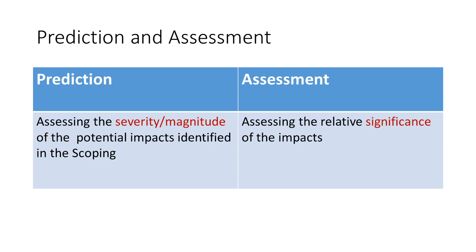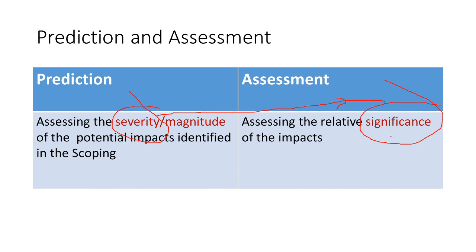What is prediction? Prediction is the part of the assessment stage of EIA. It involves assessing the severity of the impact — how severe is the damage a particular impact is going to cause. For example, water pollution identified in a tannery project. Once you know the severity, you assess the relative importance of that water pollution. So there are two terms: significance — which you can also call importance of that impact. Prediction is about severity; then you assess how important the impact is.